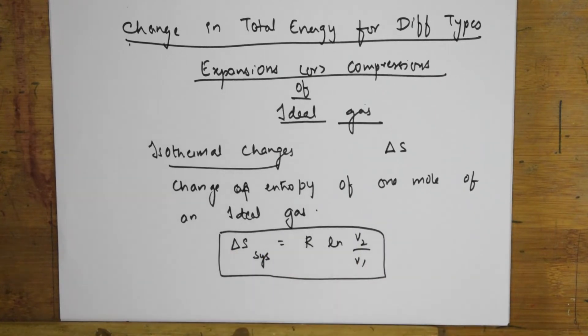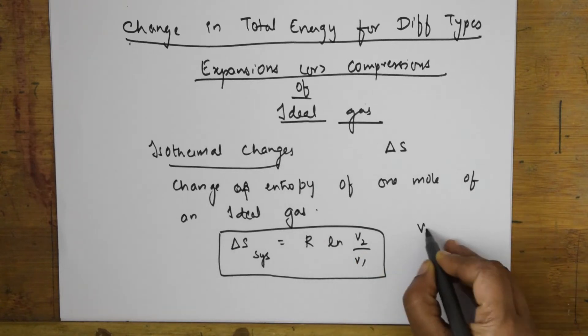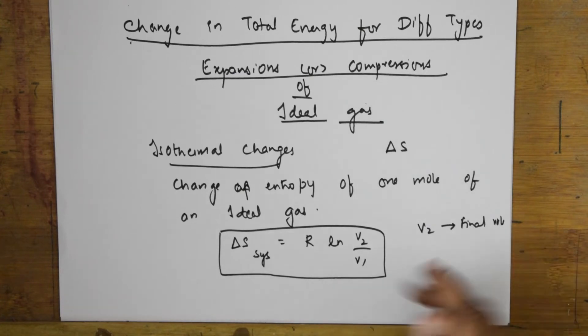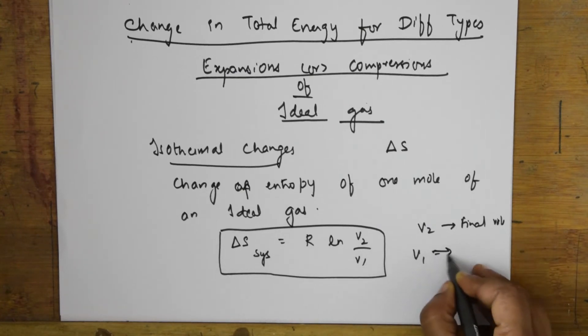This is the derived one which is already given. From this we will see how temperature is kept constant in isothermal changes. Let's take this and start working out. Now what actually is this? What is V2? V2 is basically the final volume which I am taking. What is V1? V1 is the initial volume.